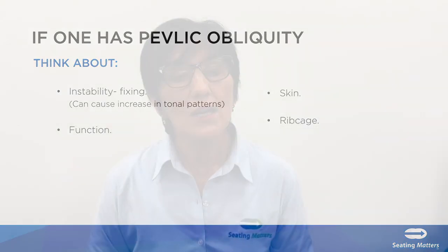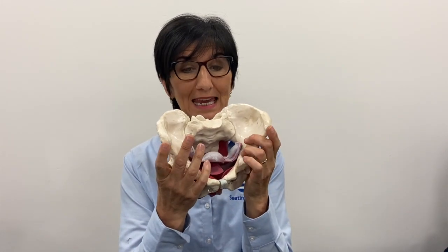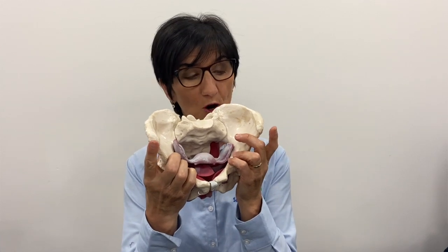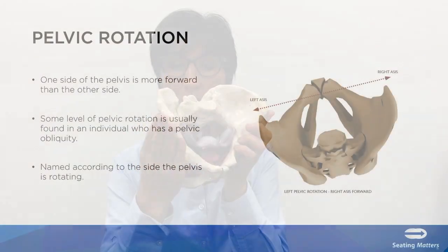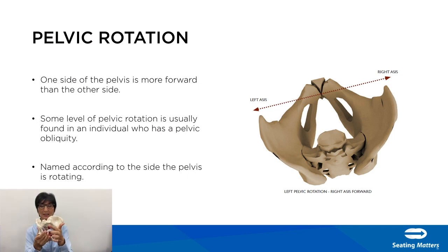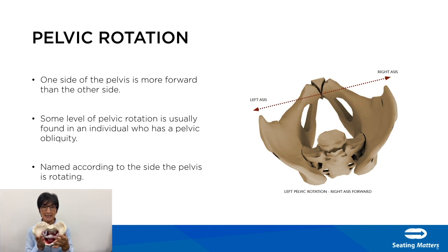Pelvic rotation is when one side of the pelvis is more forward than the other. On palpation, one ASIS is forward and one is back. We always name it according to the side it is rotating to — so if this ASIS is rotating forward, that would be a right rotation. There is usually some level of both rotation and obliquity at the same time. A leg length discrepancy when a client is seated is usually a clue that the person is sitting in a pelvic rotation.